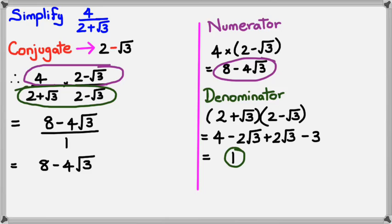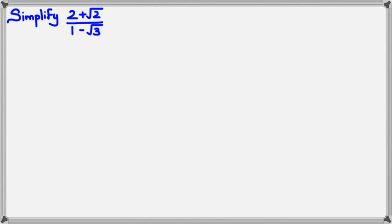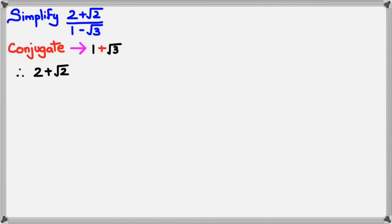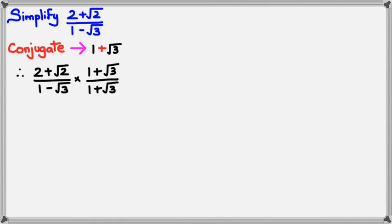Let's look at another example, similar but a little trickier. I want to simplify (2 plus square root of 2) divided by (1 minus square root of 3). To rationalize this I have to multiply by its conjugate. The conjugate of the denominator is 1 plus square root of 3. So I multiply the original fraction by (1 plus square root of 3) divided by (1 plus square root of 3), because that equals 1.